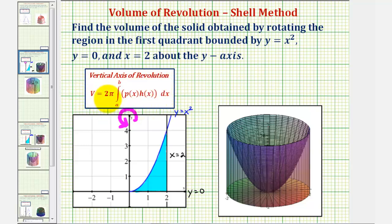where the volume is equal to two pi times the integral of p of x times h of x, integrated with respect to x from a to b, where p of x is the distance from the axis of rotation and h of x would be the height of a shell.